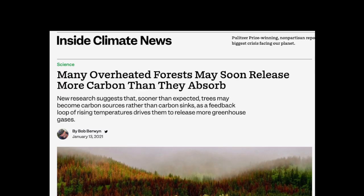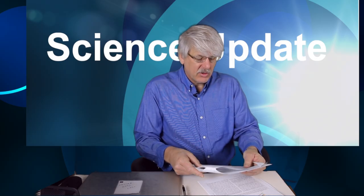The Inside Climate newspaper was published January 13th, 2021, a week ago today, and it's titled Many Overheated Forests May Soon Release More Carbon Than They Absorb. The subhead: new research suggests that, sooner than expected, trees may become carbon sources rather than carbon sinks, as a feedback loop of rising temperatures drives them to release more greenhouse gases. The first couple of paragraphs include the ideas of sudden die-offs of trees, as well as insect outbreaks that are killing trees around the world. In many places, the paper points out, forests are not growing back.